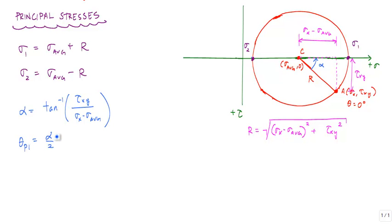And the thing we have to remember is that whatever angle you rotate in Mohr's circle, you rotate half that on the element. So theta p1 is equal to alpha over 2. And because we would go from 0 degrees here, counterclockwise, this theta p1 is also counterclockwise.